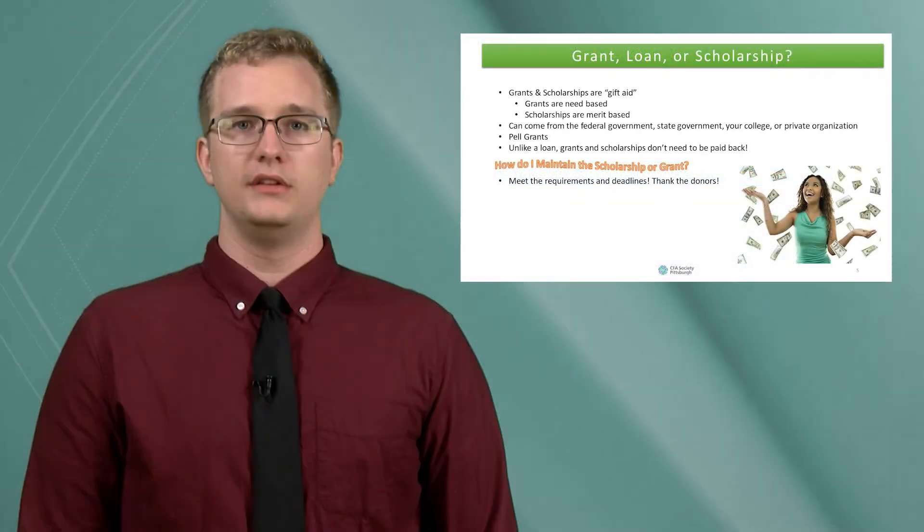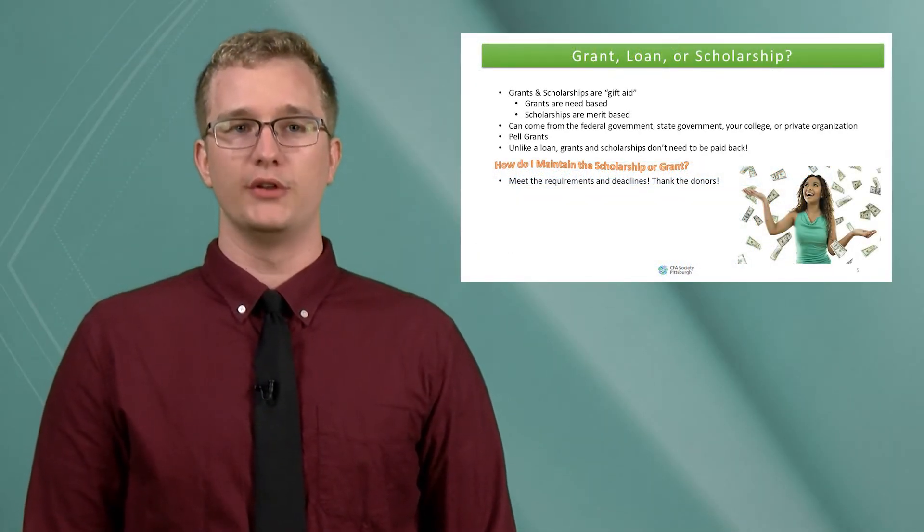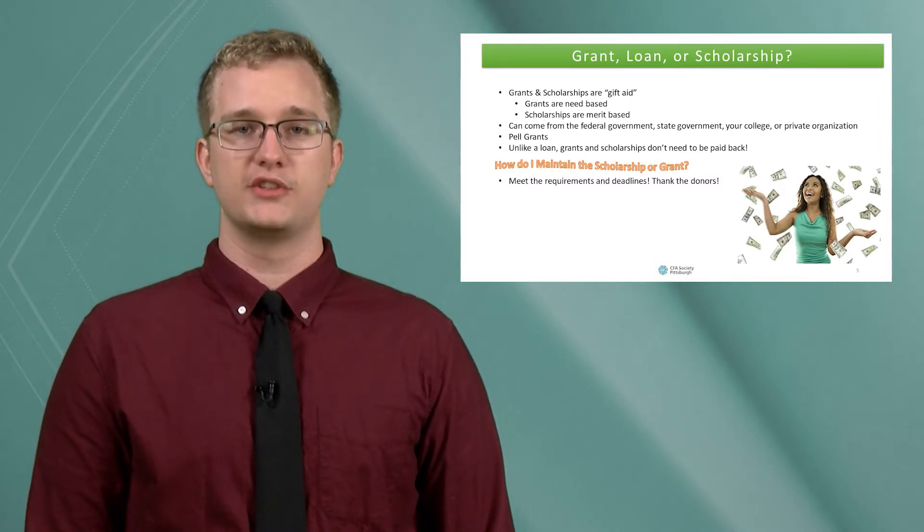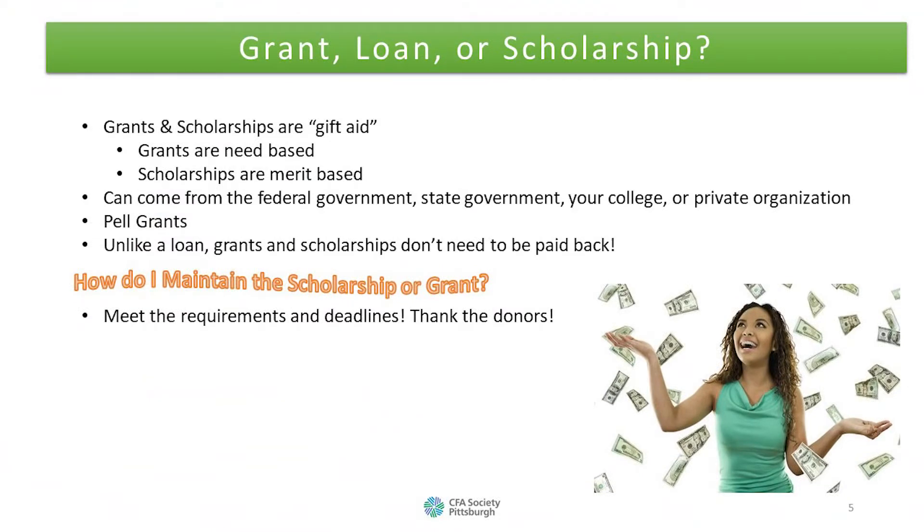Now let's take a look at grants, loans, and scholarships. First, grants and scholarships are known as gift aid. Grants are based on need whereas scholarships are based on merit. All three types of monetary aid can come from the federal, state, or local government as well as your own college or a private organization. Unlike loans, grants and scholarships don't need to be paid back. When you get a grant or scholarship, meet the requirements and deadlines, and thank the donors.